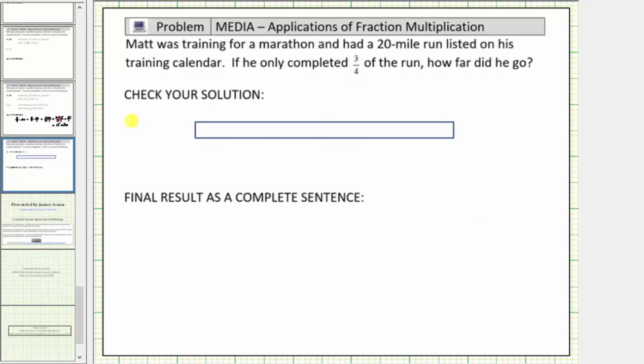The next step is to check the solution. We'll check our solution using a different problem-solving strategy. Let's let this bar represent the entire run of twenty miles. Because Matt ran three-fourths of the run, let's divide this bar into four equally sized pieces or parts.